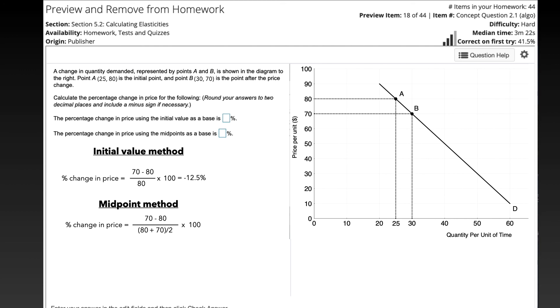So we can put that information back in here, and we have 70 minus 80 in the numerator, and then we have 80 plus 70, add it together, and divide that by 2. So that gives us 70 minus 80 in the numerator over 75, we multiply that by 100, and we get negative 13.3% for the percent change using the midpoint method.